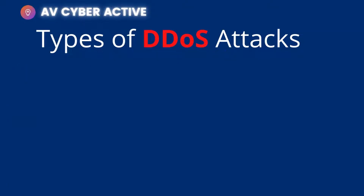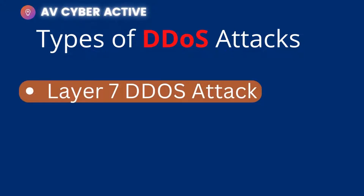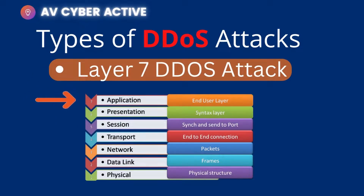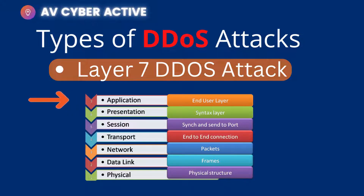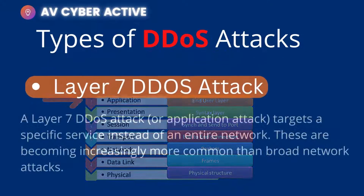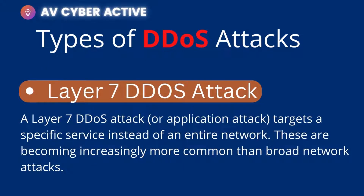The last type is layer 7 DDoS attacks, which are increasingly common nowadays. These attack the very last layer of the OSI model — the application layer. A layer 7 DDoS attack, also called an application attack, targets a specific service instead of an entire network. It might target any specific application that has already been infected, and it may create a botnet of its own. These attacks are becoming very widespread with the growth of broad network attacks.